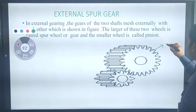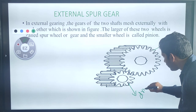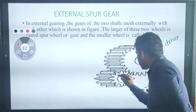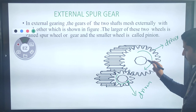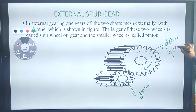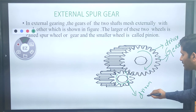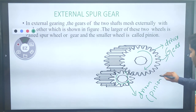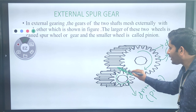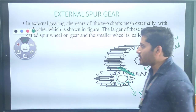In external spur gear, the driver gear and the driven gear mesh externally. The driver gear rotates in the clockwise direction and the driven gear rotates in the opposite direction. The biggest gear we call a gear and the smallest gear we call a pinion. These gears and pinions mesh externally at the contact surface — such a type is called external spur gear.